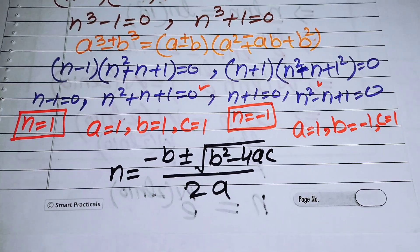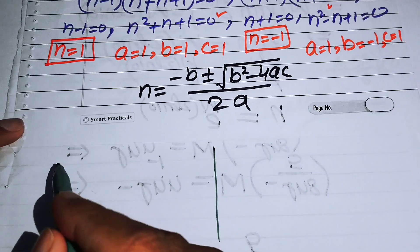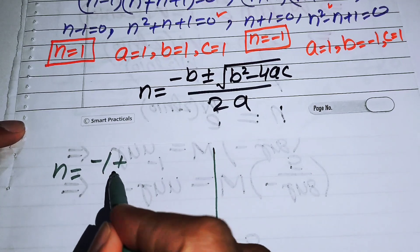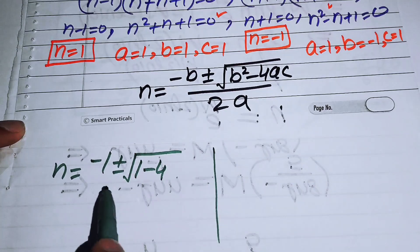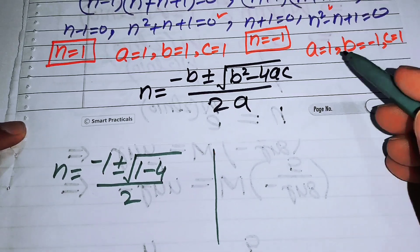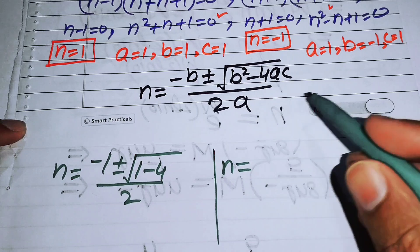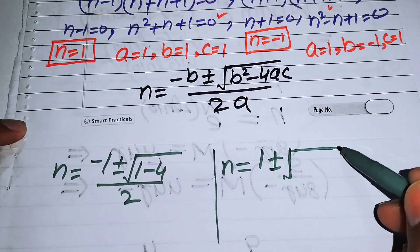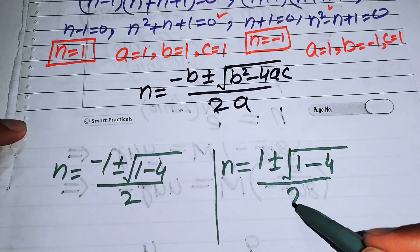Substituting the first set of values into the quadratic formula gives n equals minus 1 plus or minus square root of 1 minus 4, all over 2. For the second equation, substituting gives n equals 1 plus or minus square root of 1 minus 4, all over 2.